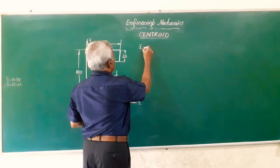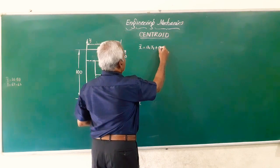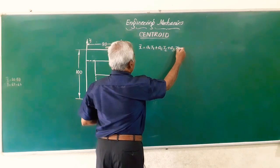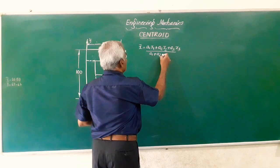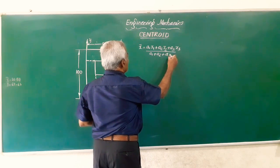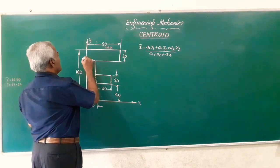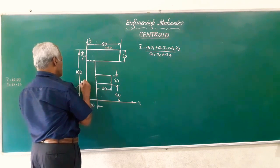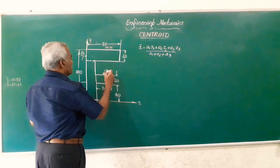Now coming back to the centroid formula, we have x-bar given by: x-bar = (A1·x1 + A2·x2 + A3·x3) / (A1 + A2 + A3). Here A1, A2, A3 are the areas of these figures. I will call the top one figure number one, the middle one figure number two, and the small piece figure number three.